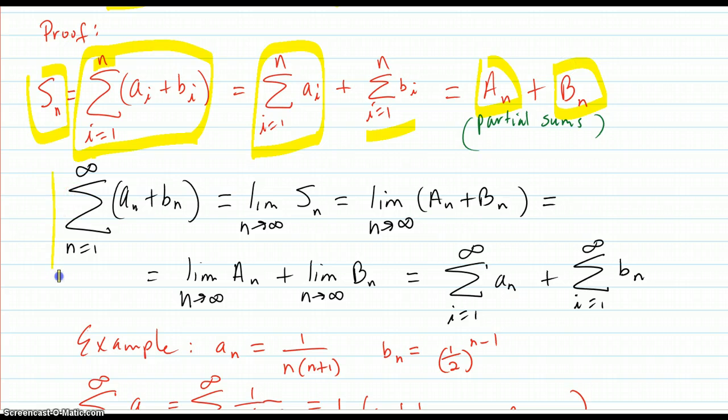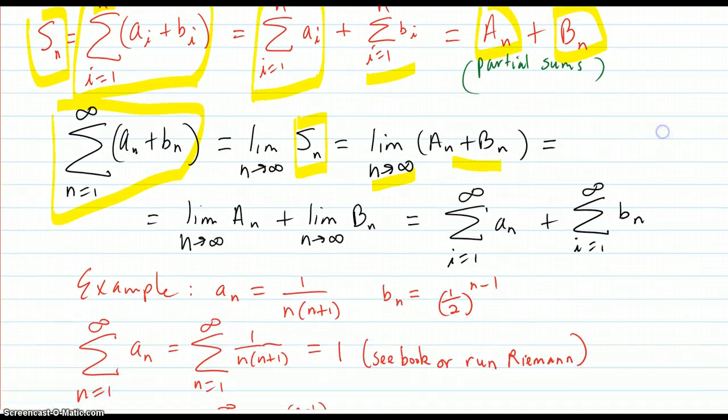So when you figure this out, that's the limit as n goes to infinity of the partial sums of S, which equals the limit as n goes to infinity of Sn, which is An plus Bn. And limits, you can break up the sum. This first limit is just this series and the second one is that series. So we're done.